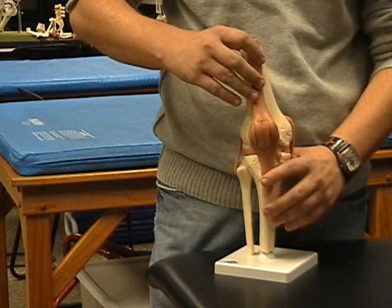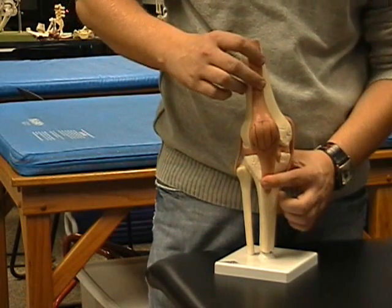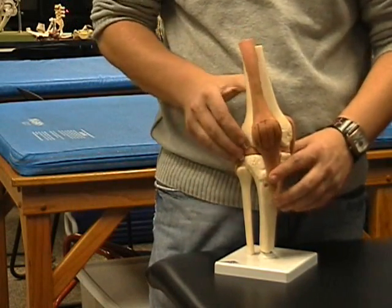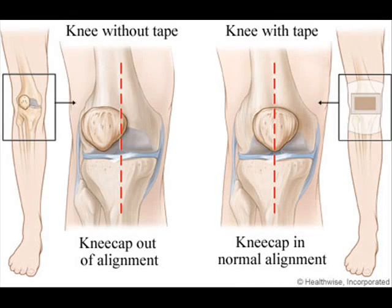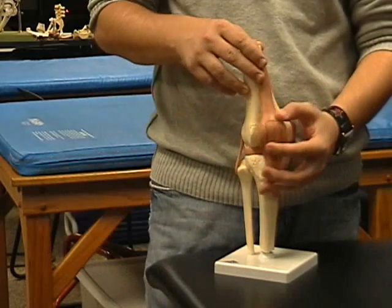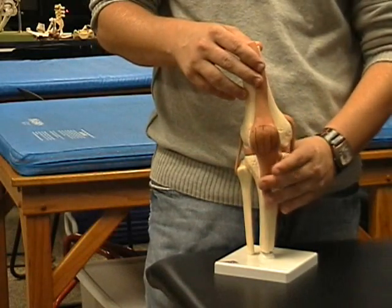A severe blow to the inside of a healthy knee can knock a kneecap out of alignment, or in extreme cases, dislocated. Symptoms of a dislocated kneecap include the knee looking misshapen like a bone is out of place, not being able to bend or straighten the knee, knee swelling, or severe pain.